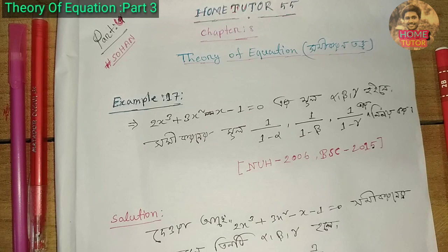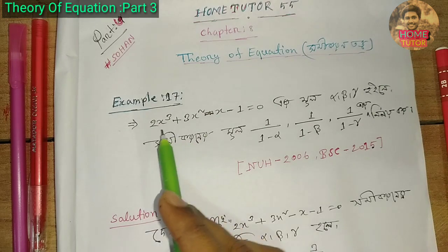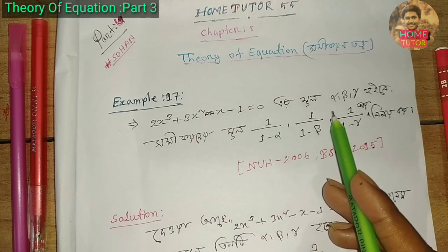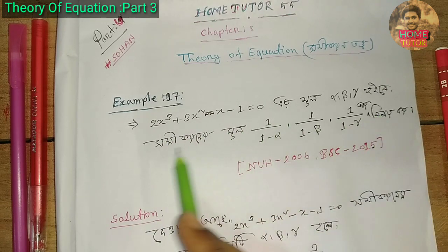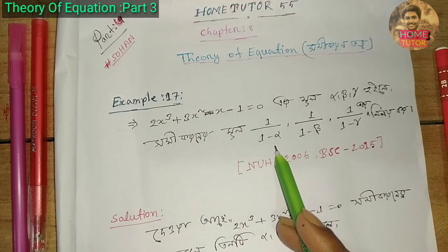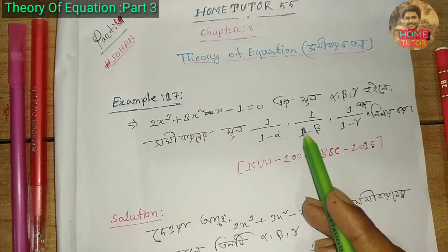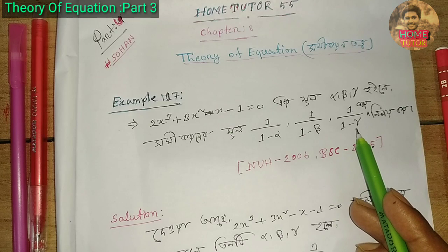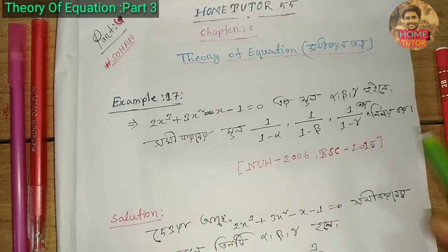I'm following the three series of the same series. So let's take a look at the example. We have 2x³ plus 3x² minus 6x minus 1 equal to 0, with roots alpha, beta, and gamma. We need to find: 1 by (1 minus alpha), 1 by (1 minus beta), and 1 by (1 minus gamma).